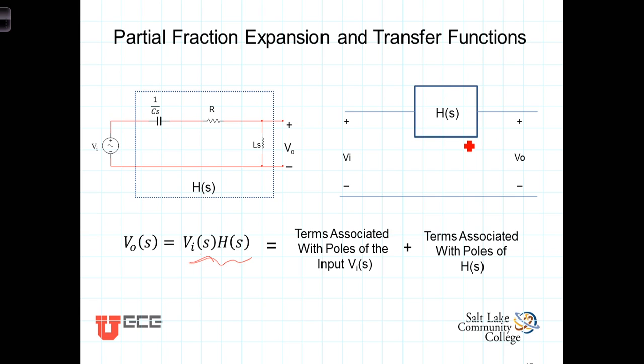If the circuit itself is stable, it turns out that the poles of the transfer function will lead to time domain terms which die out. They won't go on forever. They will be what we refer to as the transient.